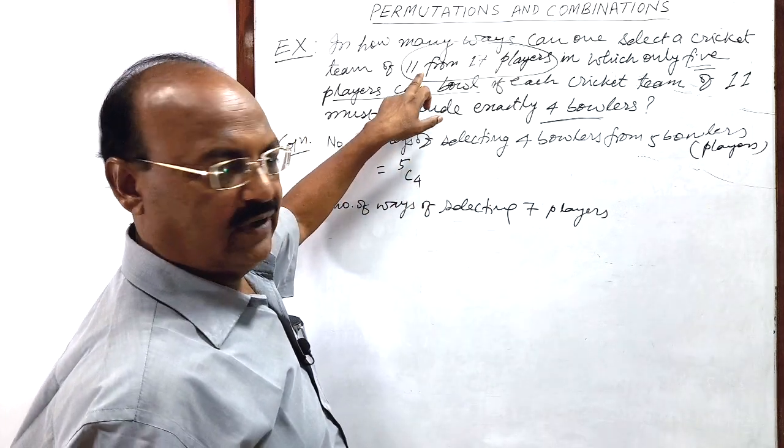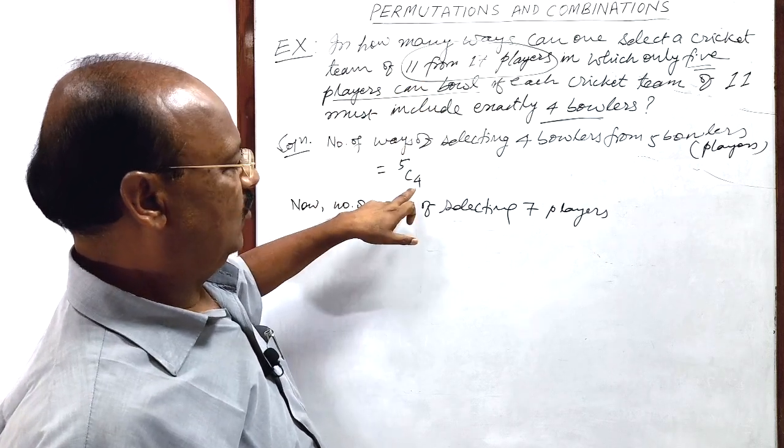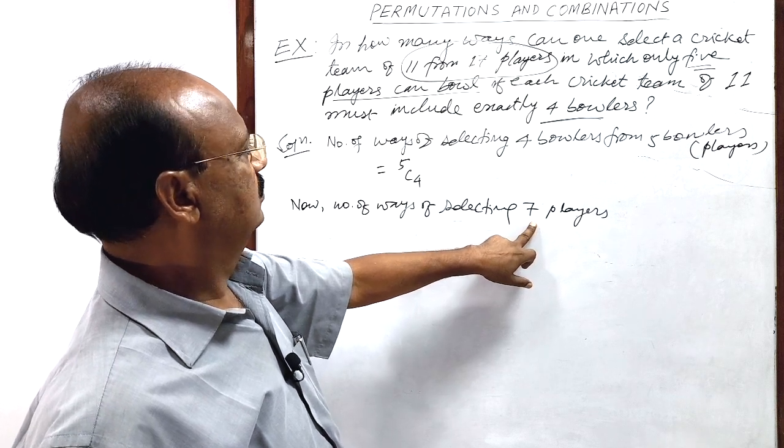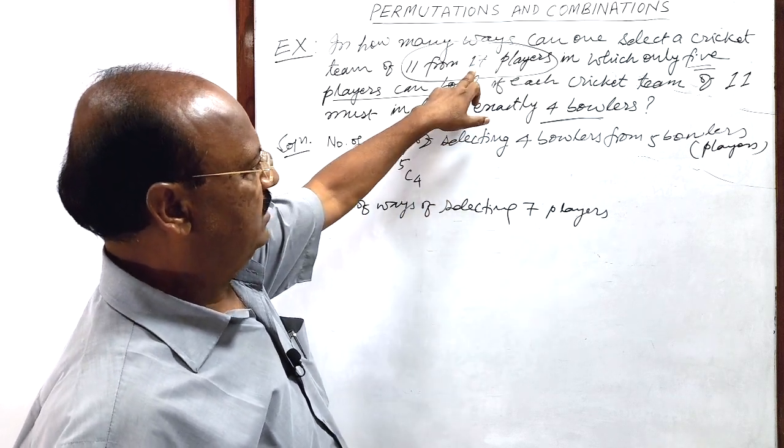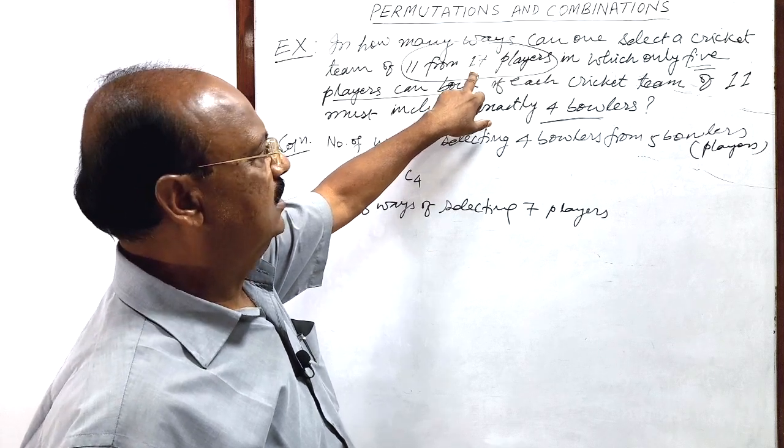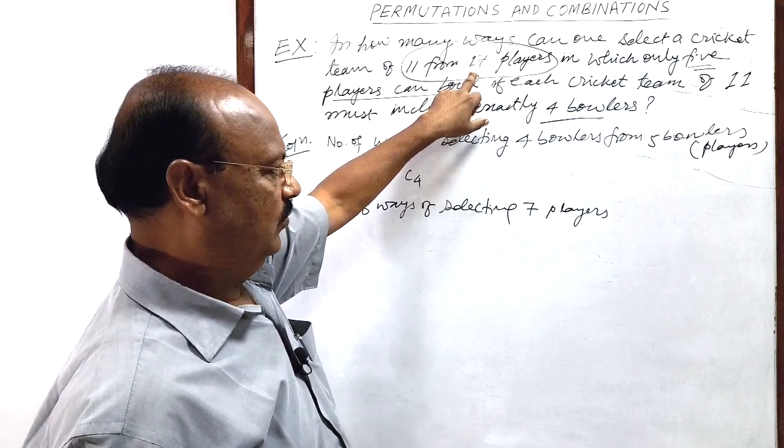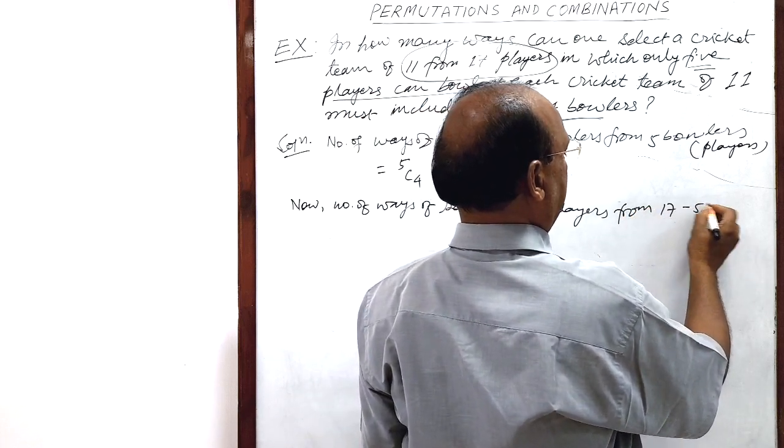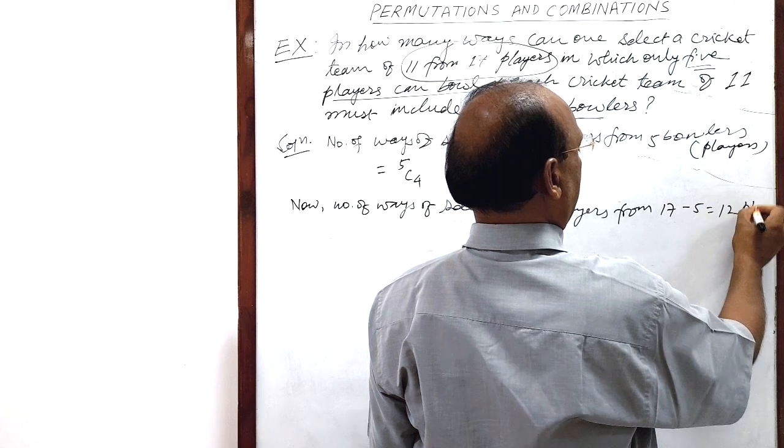So team should have 11 players. That is why here 4 bowlers have been selected. Remaining 7, we have to select from how many? In total of 17 players, there are 5 bowlers. So remaining are 17 minus 5, which is equal to 12 players.